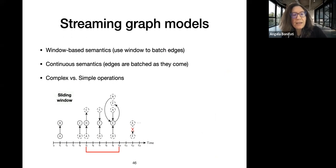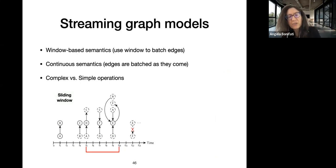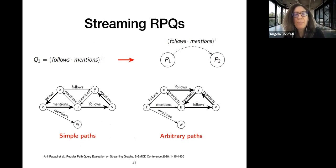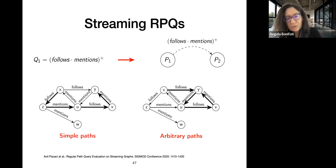We focus on the sliding window model with window-based semantics. The window slides and is used for batch computation, and we can evaluate queries with continuous semantics as edges arrive in the stream in batches. We support both complex and simple operations, including regular path queries with regular expressions. For example, a query looking for paths of 'follows' concatenated with 'mentions' with an arbitrary number of hops, supporting both simple path and arbitrary path semantics.